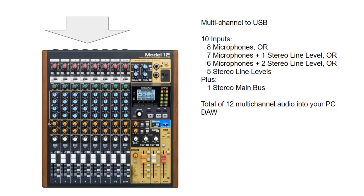The Tascam Model 12 is a 10-input audio mixer which can be a combination of eight microphones, or seven microphones and one stereo line level, or possibly six microphones and two stereo line levels, or five stereo line level inputs. Each of the ten inputs are individually sent to your PC via USB as individual channels, plus you get one stereo main bus going to your DAW as well. So in total, 12 inputs.